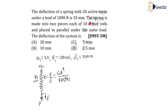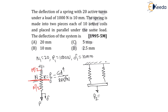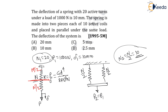The spring is made into two pieces each of 10 active coils and placed in parallel under the same load. This spring is cut exactly at the center, so the number of coils becomes n/2 — 20 coils become 10 and 10. These 10-coil springs are kept in parallel under the same load, so p₂ = p₁. Now n₂ = n/2 = 10. Since k is inversely proportional to the number of active coils, as coils become half, k must become twice — so k becomes 2k.